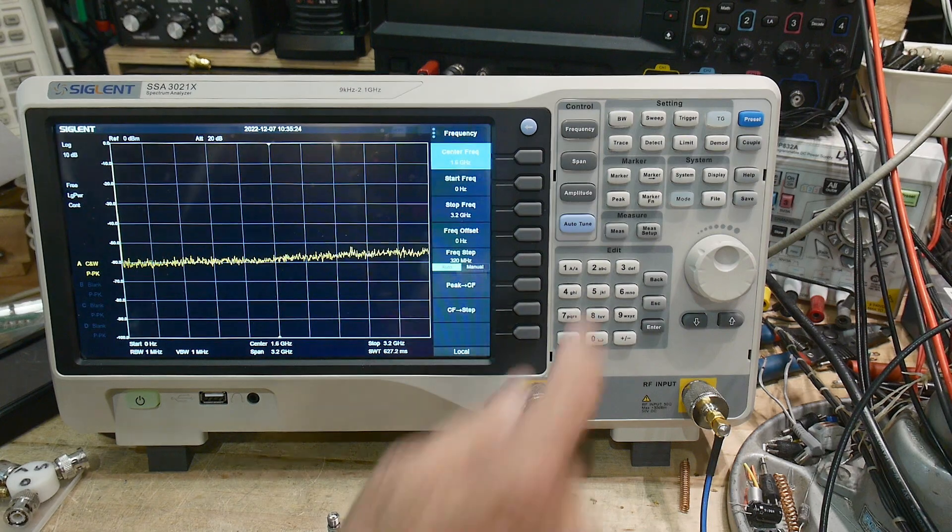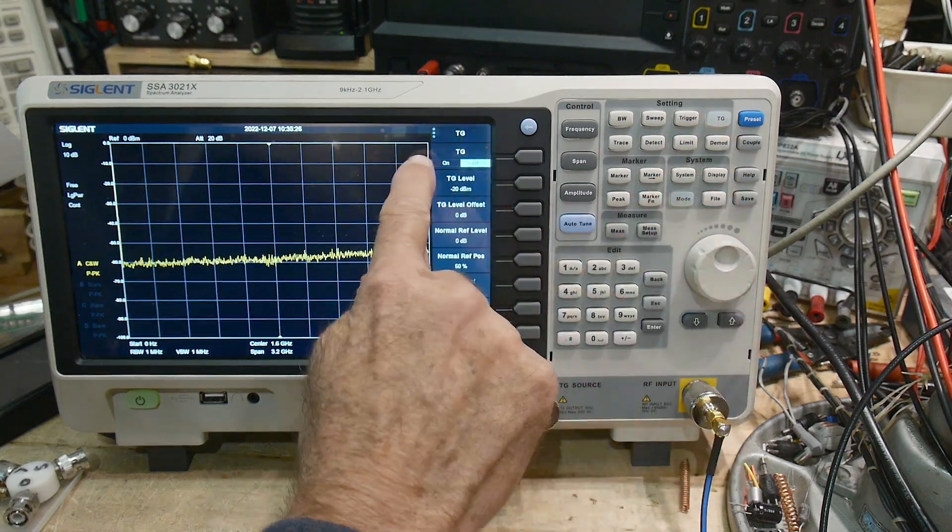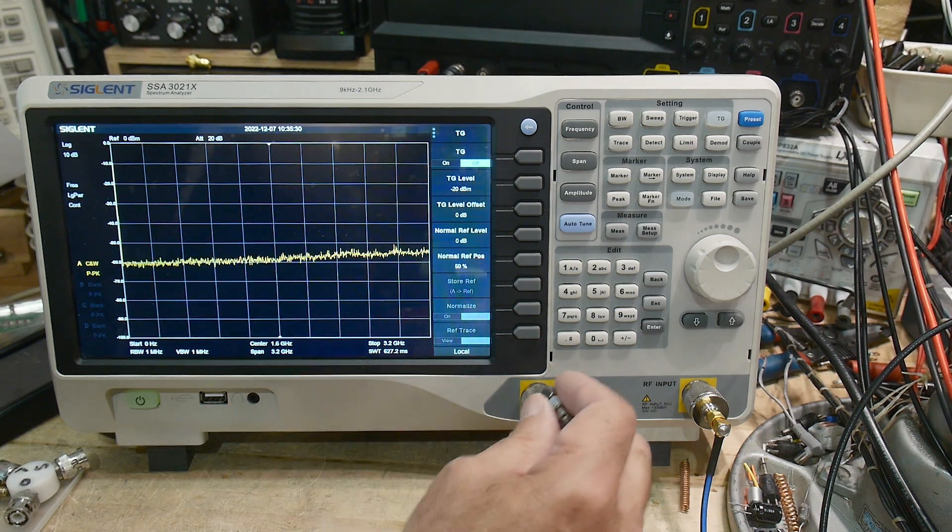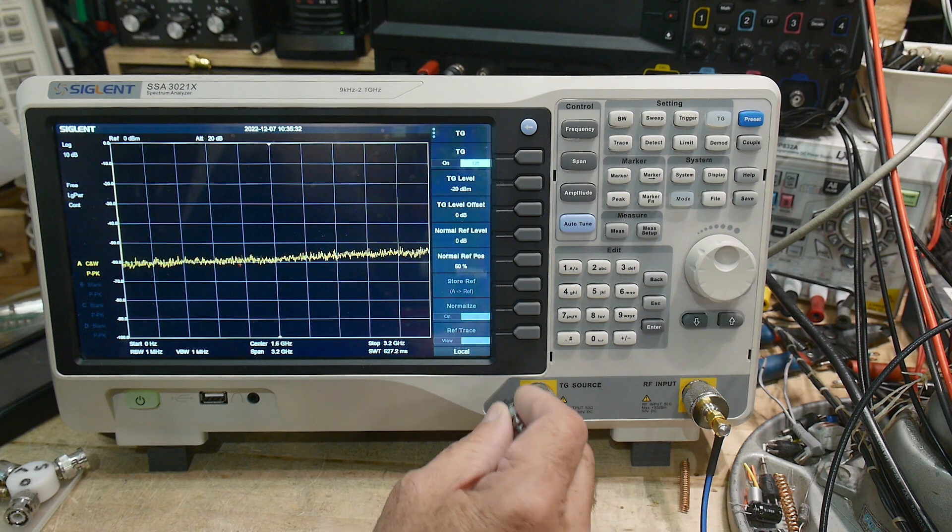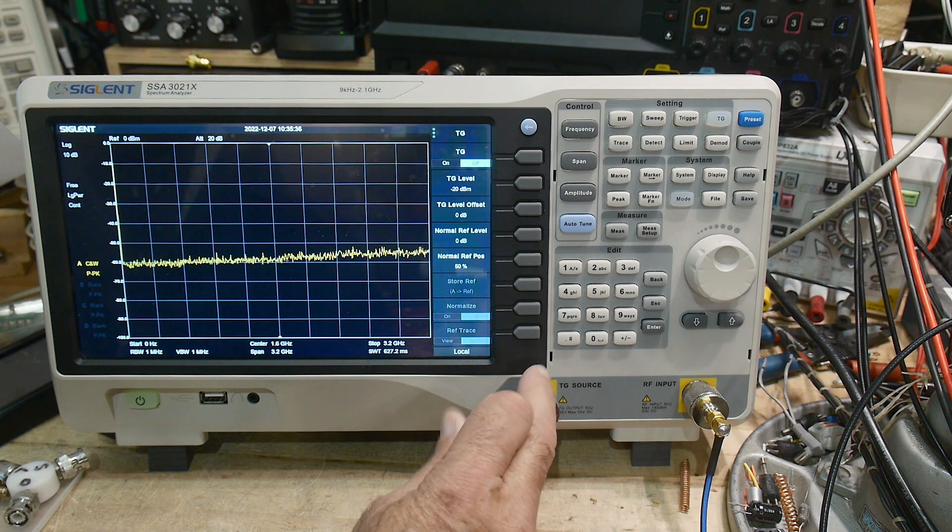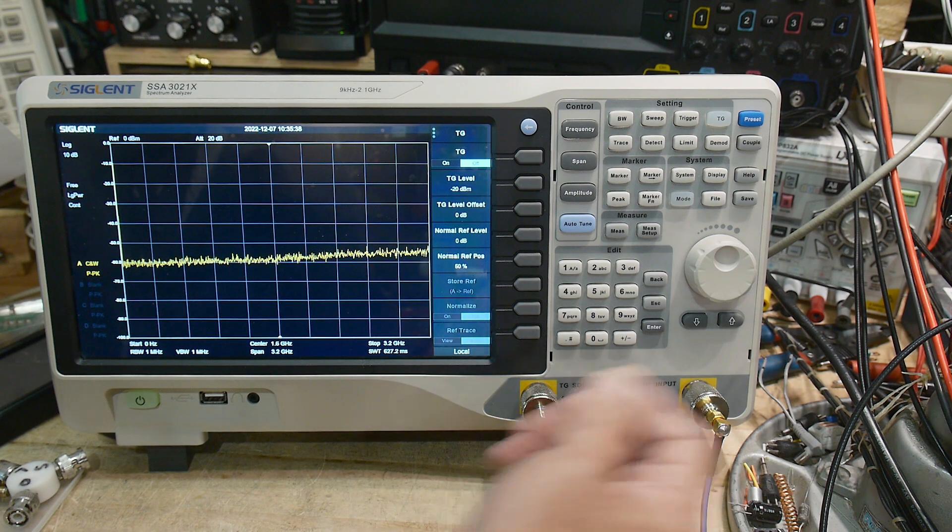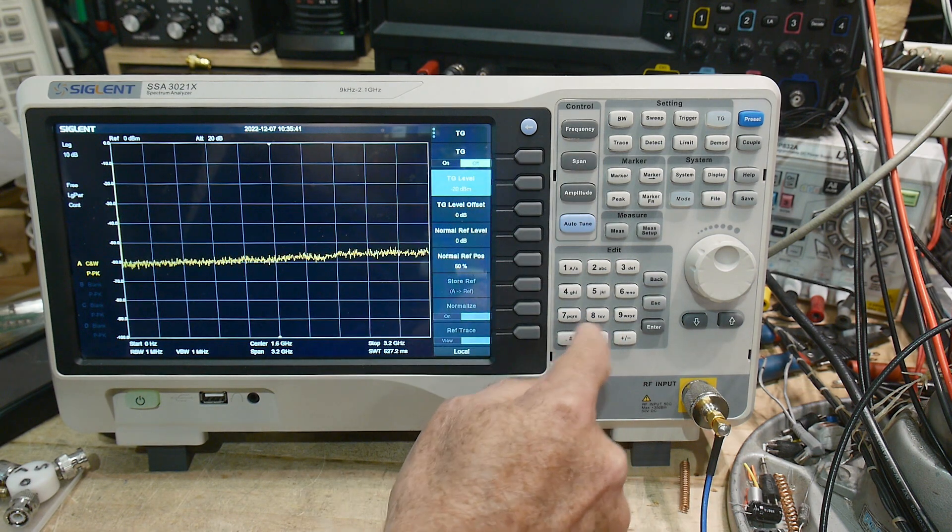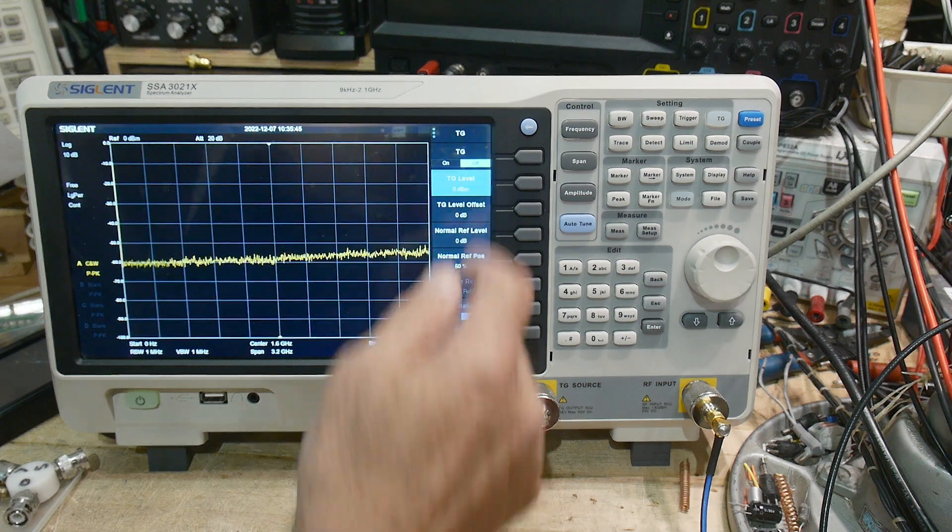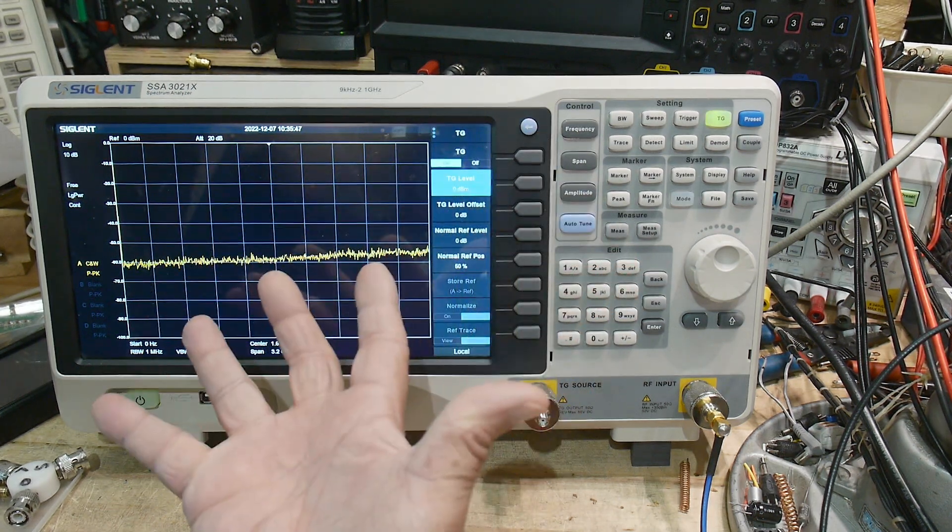Then we need to turn on the tracking generator, which is here. It says tracking generator on/off. You need to set a level. Now we're going to be testing attenuators, so we want a fairly high level out of the source because we're going to be attenuating it before we measure it. So let's go ahead and set the output to 0 dBm. We can say tracking generator on.